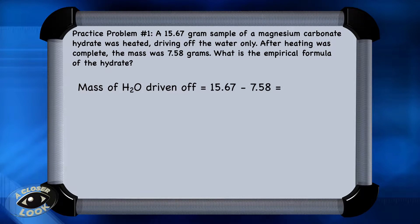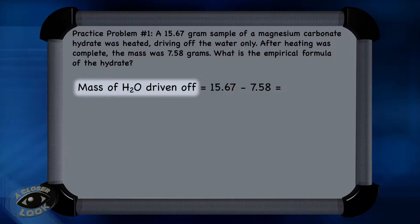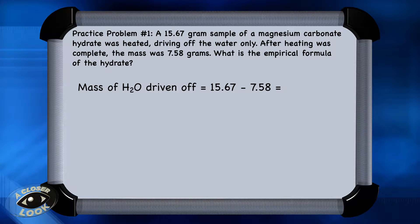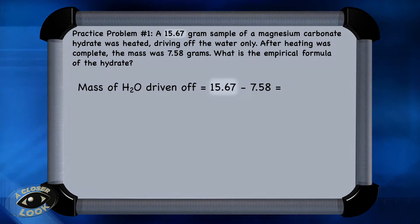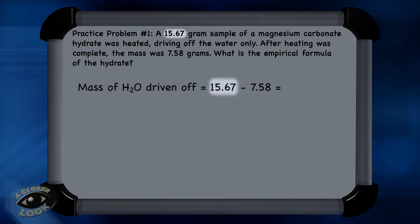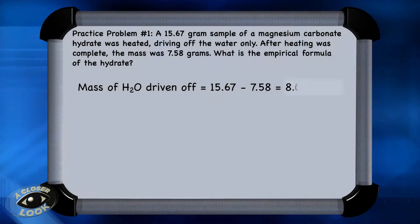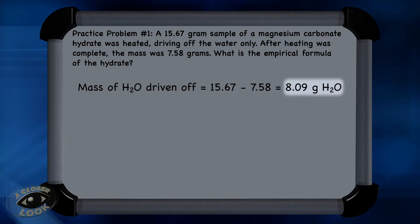The first step is to figure out the mass of water that was driven off. To do that, take the mass of the hydrated salt, which was 15.67 grams, and subtract the mass of the anhydrous salt, what was left after heating. 8.09 grams of water were driven off during the heating process.